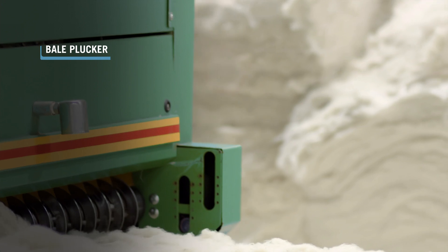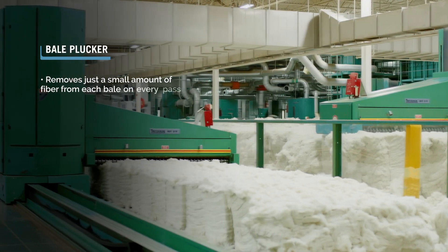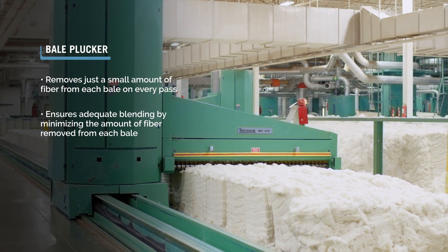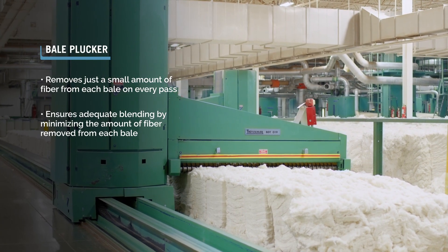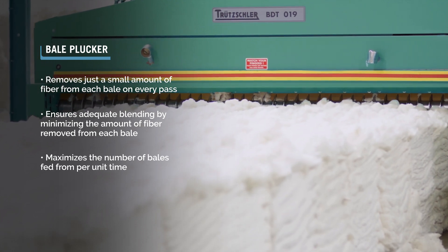The bale plucker moves back and forth along the laydown, removing just a small amount of fiber from each bale on every pass. This ensures adequate blending by minimizing the amount of fiber removed from each bale and maximizes the number of bales fed from per unit time.